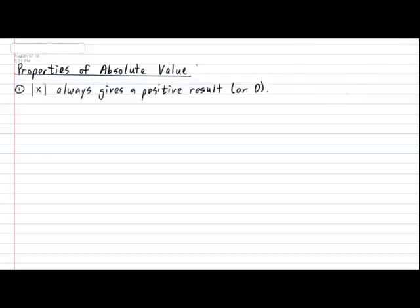The first property is kind of trivial, but I want to write it down anyways. The first property states that the absolute value of a number x always gives a positive result, or 0 if x was 0. Quick example: the absolute value of negative 5 gives 5, and the absolute value of positive 4 also gives positive 4. There's no exception to this rule — the absolute value of anything will always give you a positive result.